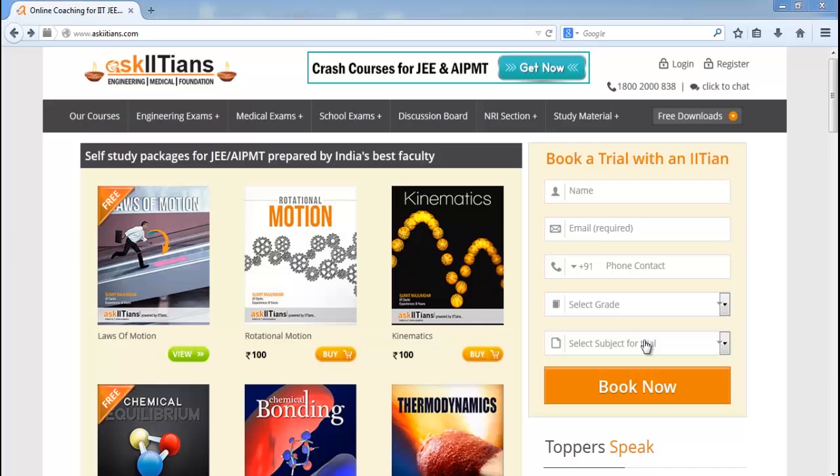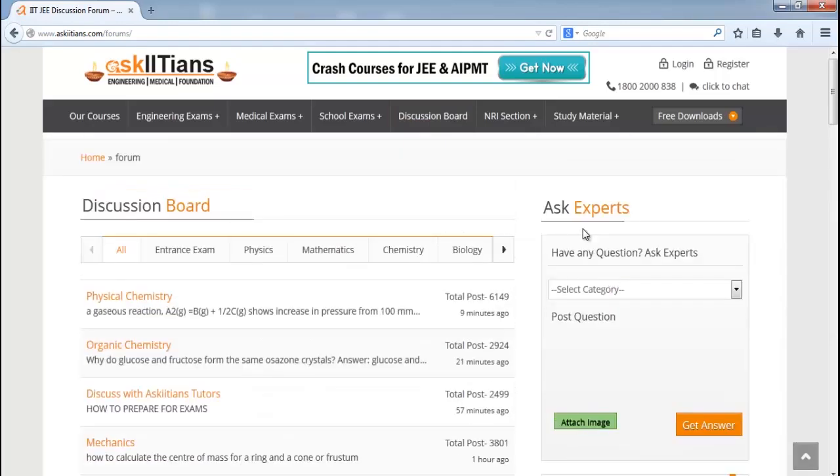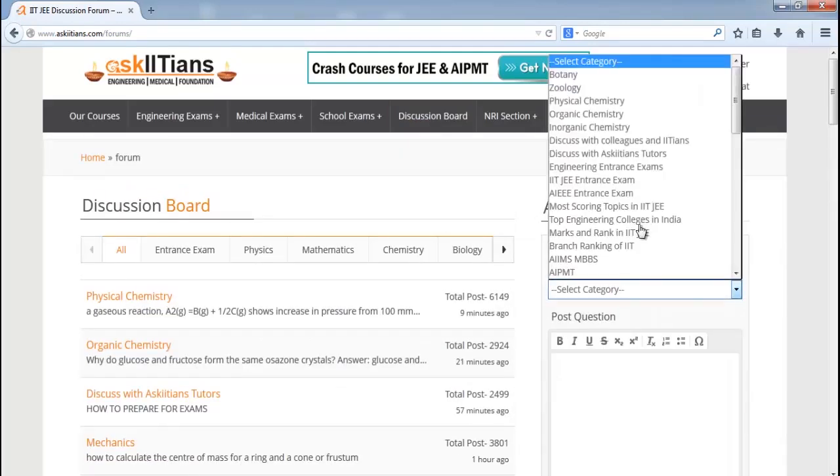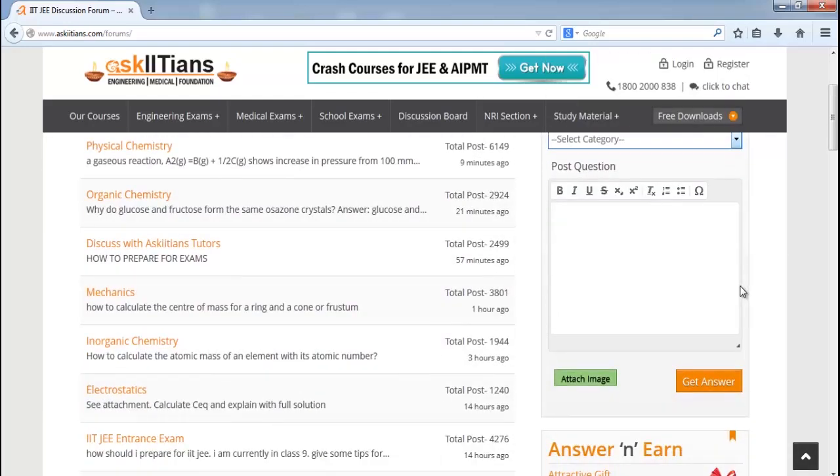While going through the lecture, if you face any doubt, you can post your doubt for free at askiitians.com. In order to do so, you first need to navigate to askiitians.com. Then while going to that link, you can use the discussion board link which is over here. Clicking on this particular discussion board link, it will take you to a page where under the head of 'Ask the Experts' you can post your doubt under various categories, and the team of askIITians experts will get back to you between 24 to 48 hours.